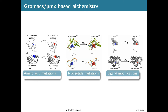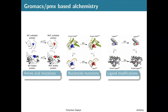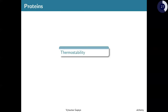Let's look at what we can achieve with these alchemical approaches, divided roughly into three categories: amino acid mutations, nucleotide mutations, and ligand modifications. All of these can be achieved by changing the thermodynamic cycle we construct. Let's look at protein mutations and ask: can we accurately predict how mutations change protein thermostabilities?